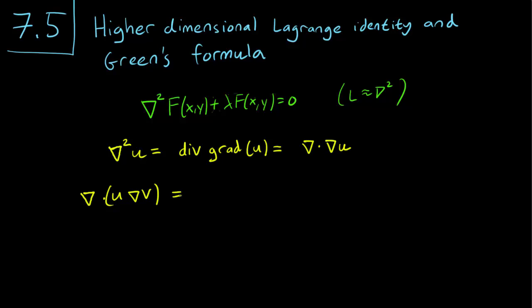So we have a product rule for the gradient as well, and we differentiate the first part first. So that's u, so gradient u dot with gradient v plus u gradient dot the gradient of v.